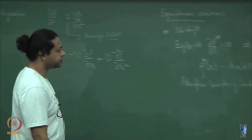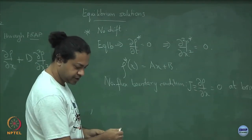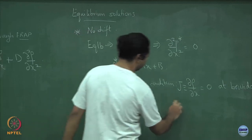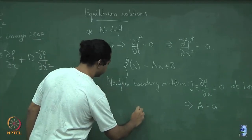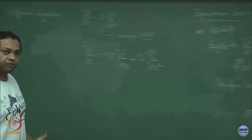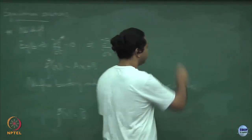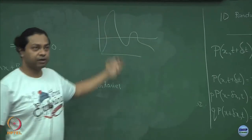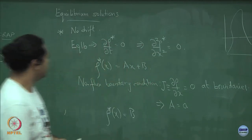Nothing flows in or out. If you impose this no-flux boundary condition, that implies that a must equal 0, and therefore the equilibrium solution becomes what you would expect: it is a constant. If you wait long enough, the diffusion equation will take whatever inhomogeneities you had in your profile and make it a flat, uniform profile.